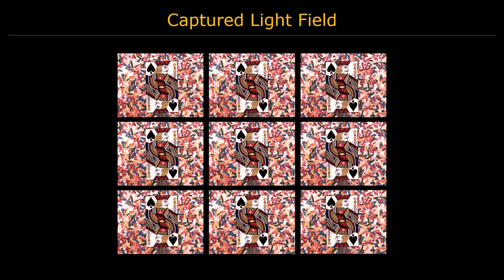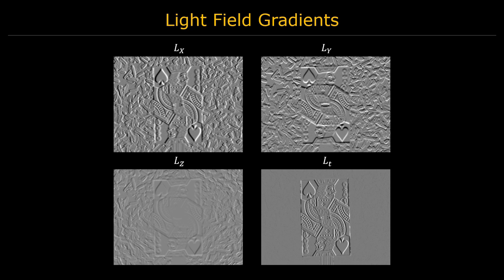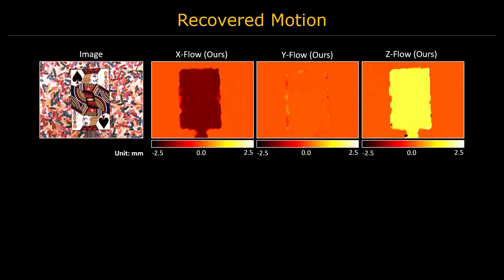Scene motion consists of the card moving diagonally in the XZ plane by 2.4 millimeters. The light field gradients are computed by a Gaussian filter combined with a finite difference filter. Our method can recover the scene motion with sub-millimeter precision along all three axes, as shown in the figure.